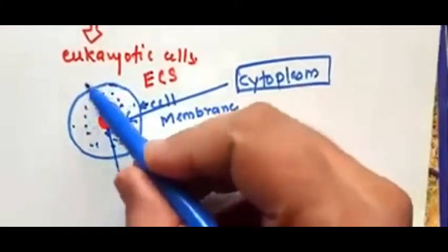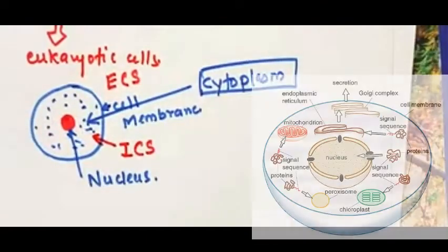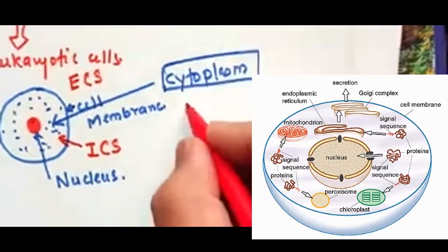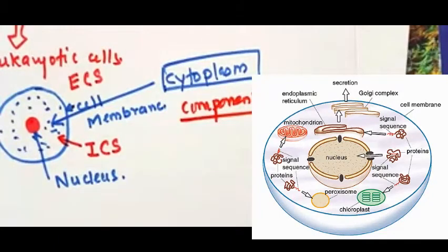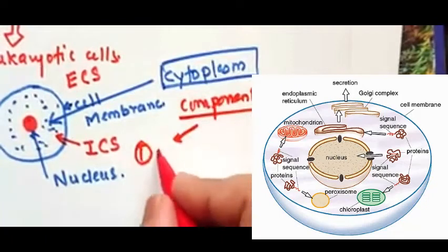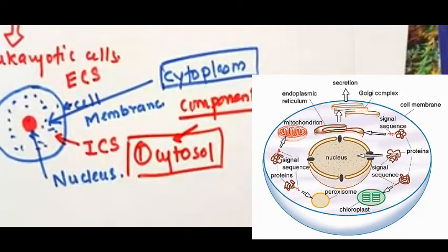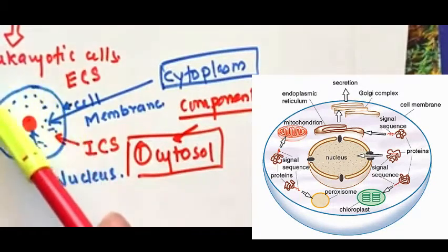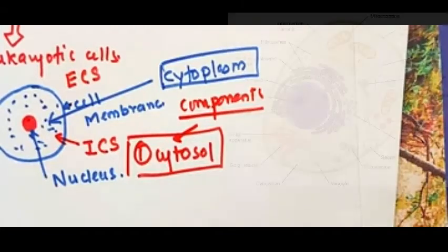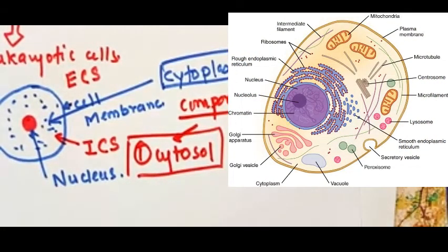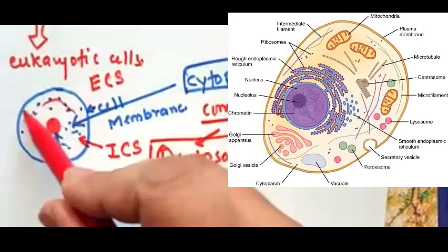Now let's talk about what exactly is inside the cytoplasm — the components of the cytoplasm. There are three main components. The first component is the fluid filled inside the cytoplasm, which is called the cytosol. Cytosol is a semi-fluid or liquid medium inside the cell, found outside the nucleus but within the cell membrane.